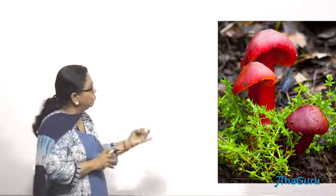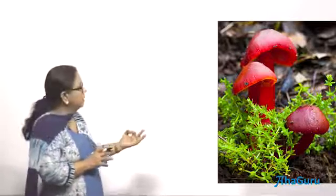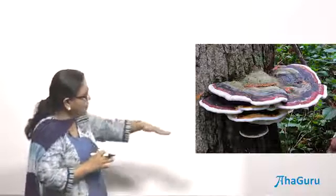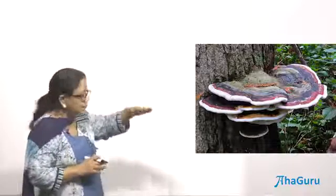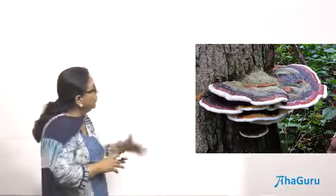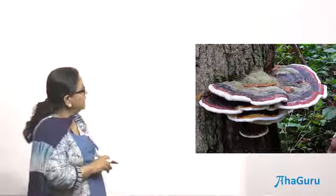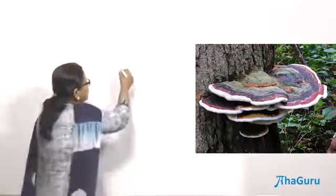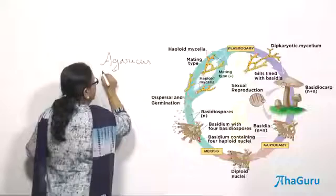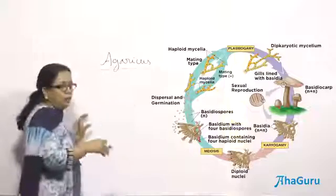Mushrooms, toadstools, puff balls, and shelf fungi all come under the group called Basidiomycetes. Shelf fungi look like shelves growing on a tree. The most common Basidiomycete is the mushroom, which is called Agaricus. The common edible mushroom is known as Agaricus. Now let us look into the life history of Basidiomycetes.